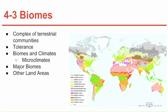The major biomes include: tropical rainforest, usually found near the equator; tropical dry forest; tropical savanna; temperate grassland; desert; temperate woodland and shrubland; temperate forest; northwestern coniferous forest; the boreal forest, also known as the taiga biome; tundra; and mountain and ice caps. Other land areas include mountain ranges and polar ice caps.